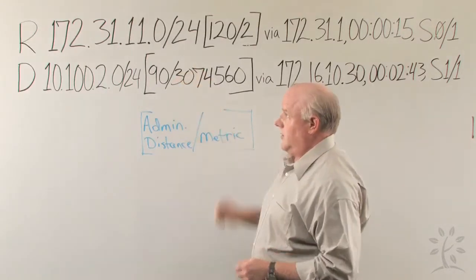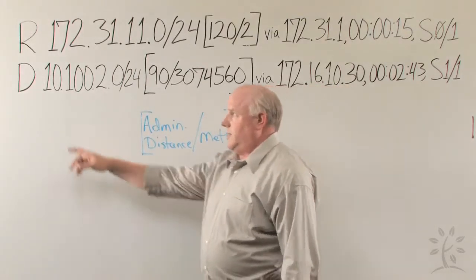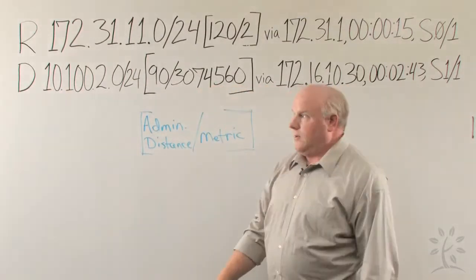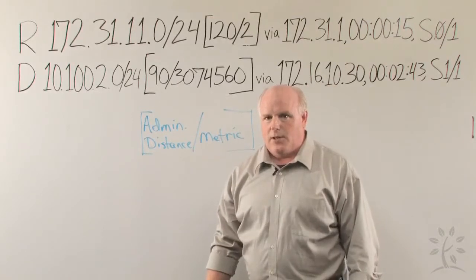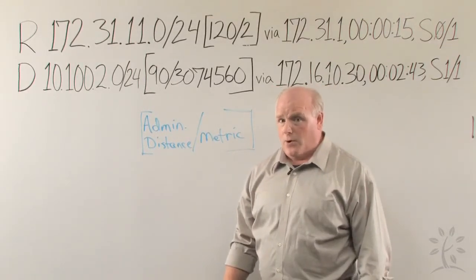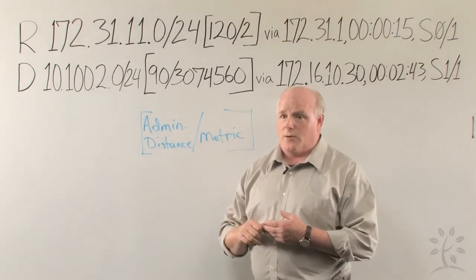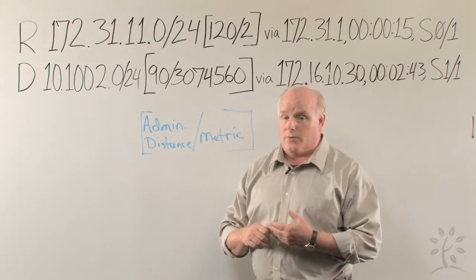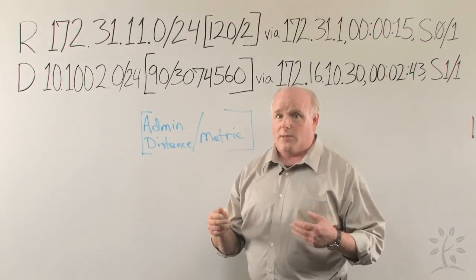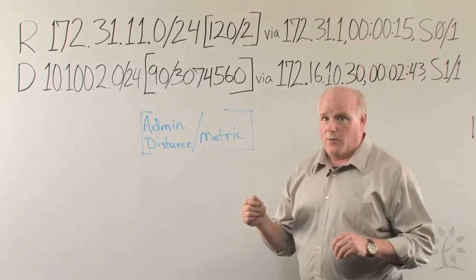Let's take a look at the second line now for another example of how these can be read. The D indicates that this route comes from EIGRP. EIGRP is an updated and much more sophisticated protocol than RIP, and instead of just counting hops, EIGRP can count bandwidth, wire speed, and a few other factors to come up with a much more realistic map of how the network is performing.